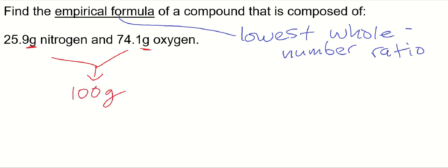So what we can say is that this is 74.1% oxygen and 25.9% nitrogen. That's important that it's out of 100, otherwise we'd have to make it out of 100.